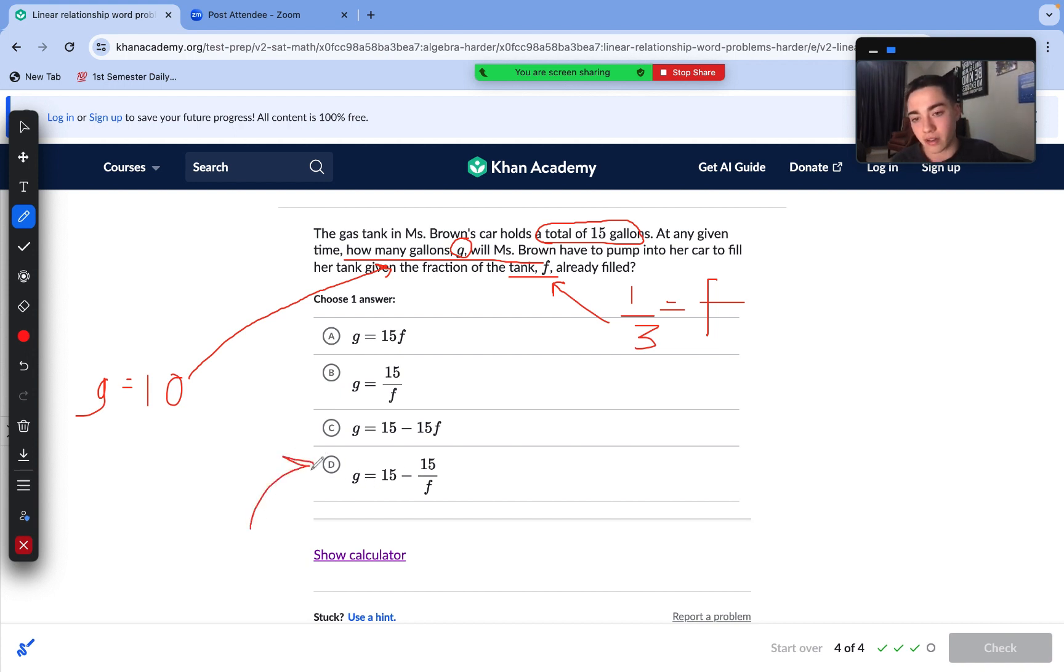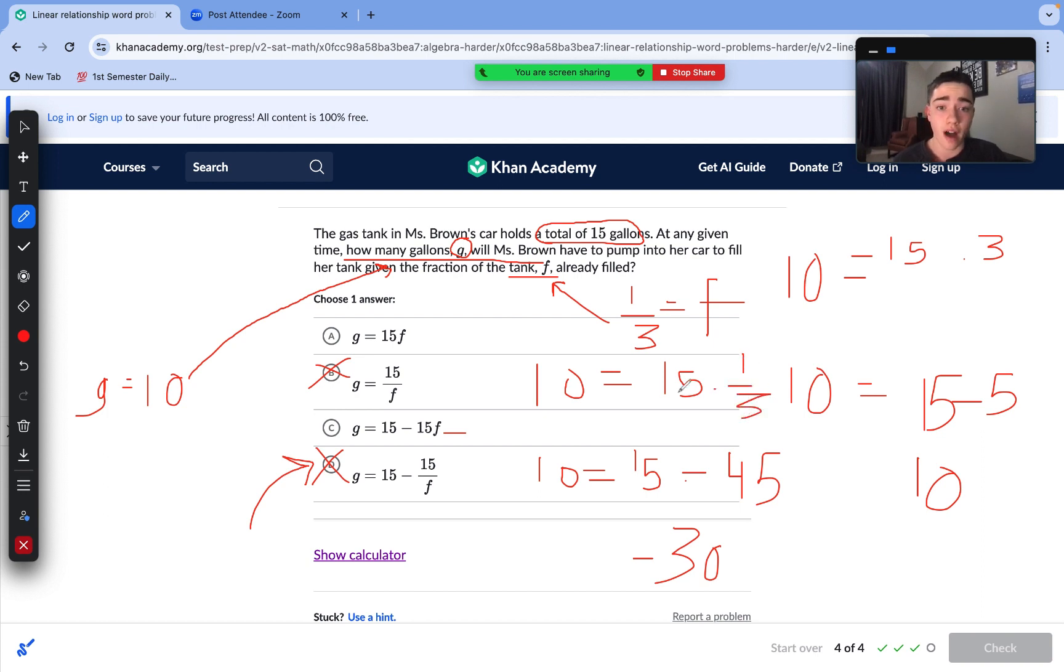So, we have 10 equals 15 minus 15 over one third is actually 15 times 3, which is 45. 15 minus 45 is negative 30, and 10 is not equal to negative 30. D is incorrect. Now, let's try C. 10 equals 15 times one third is 5. 15 minus 5 is indeed 10. So, we should keep this one in for now. Now, G, we have 10 equals 15 times three. We already went over how to do that before, which is 45. 10 does not equal 45. And now, we have, does 10 equal 15 times one third? 15 times one third is 5. 10 equals 5. So, of course, 10 does not equal 5. C is our answer here.